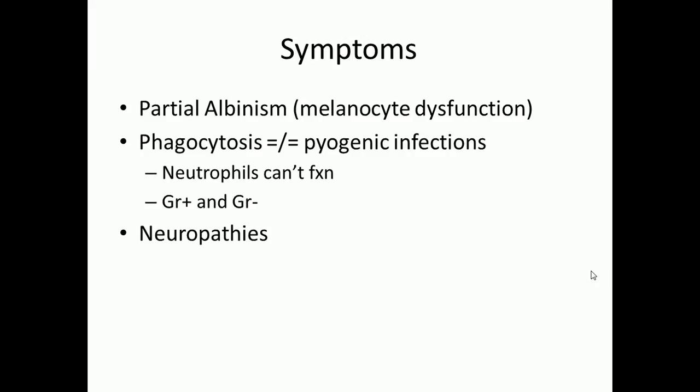So the three main points are: you'll have partial albinism; you'll have recurrent pyogenic infections specifically due to phagolysosome malformation, since phagocytosis doesn't work and you're not able to merge bacteria into the lysosome; and lastly, you'll have peripheral neuropathies.